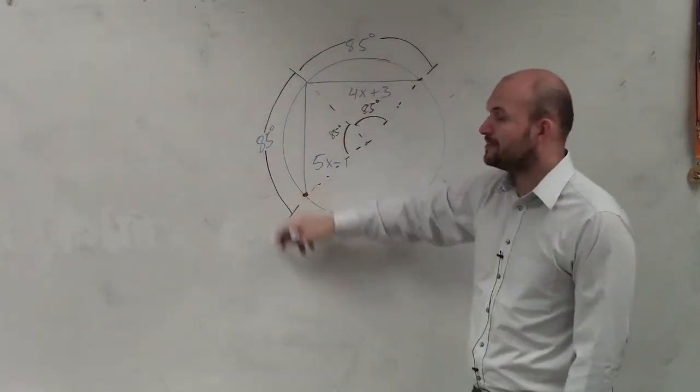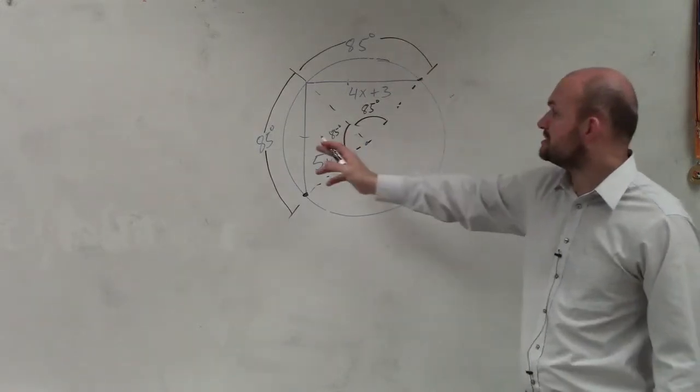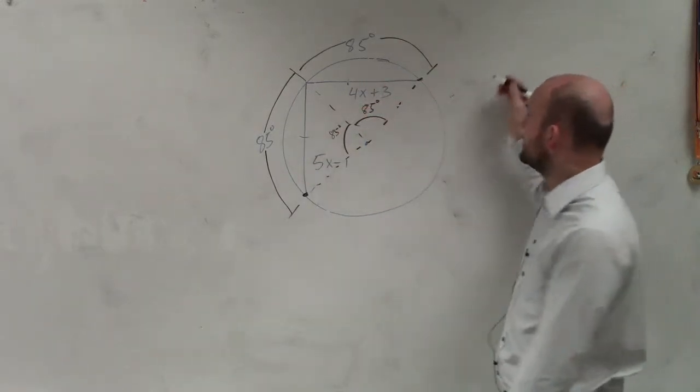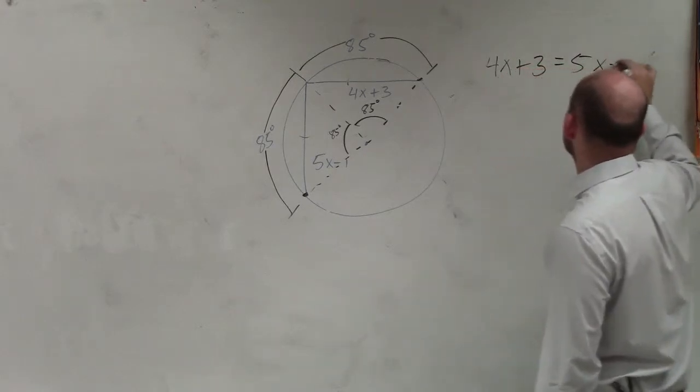So since these are the same length, the two cords are also equal. So since these two cords are equal in measure, I can say 4x plus 3 is equal to 5x minus 1.